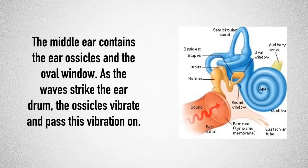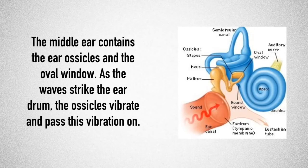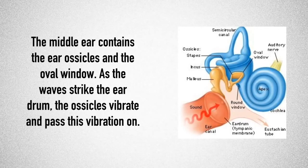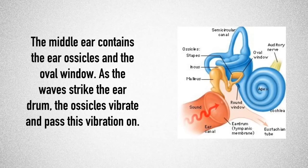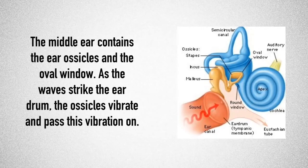Once we get to the eardrum, we're now into the middle ear, which is made up mostly of the ear ossicles or the little bones and the oval window. As the sound wave strikes the eardrum, the ossicles on the other side vibrate and help to pass that vibration on.